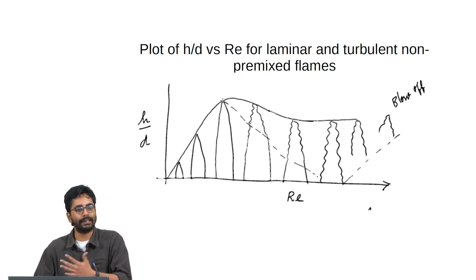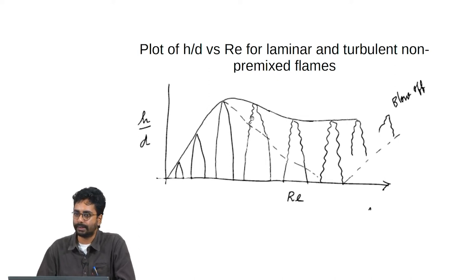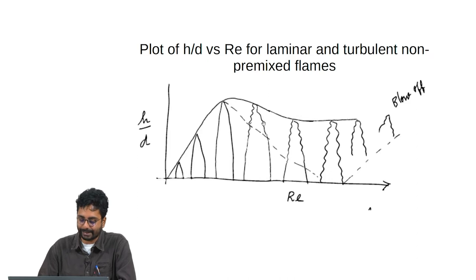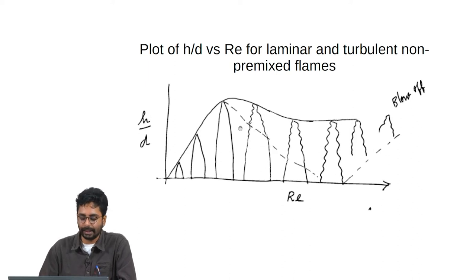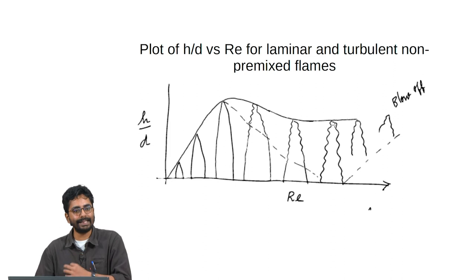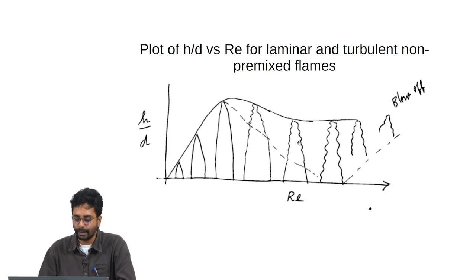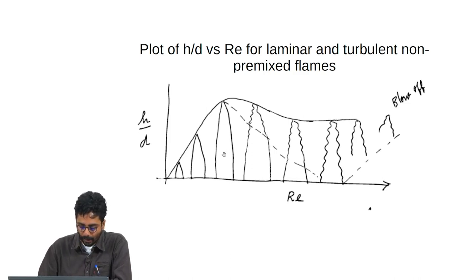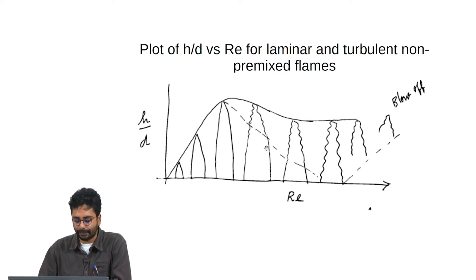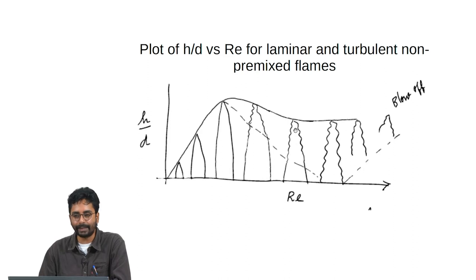When the Reynolds number crosses a certain threshold, effects of turbulence appear. The base of the flame remains laminar while the tip starts becoming turbulent. As Reynolds number increases, the height remains more or less the same — it comes down a little and then stays constant. What changes is that more and more of the flame becomes turbulent.